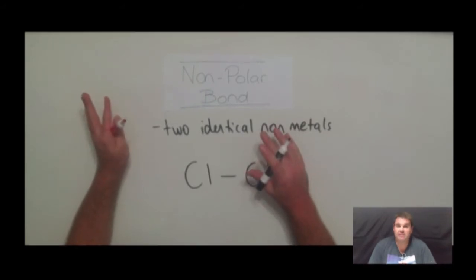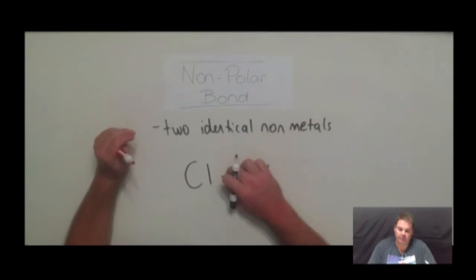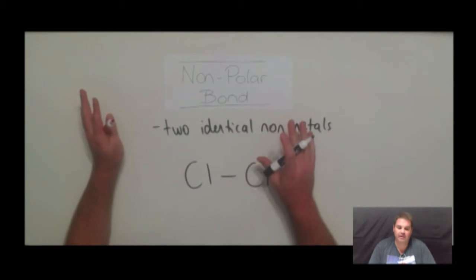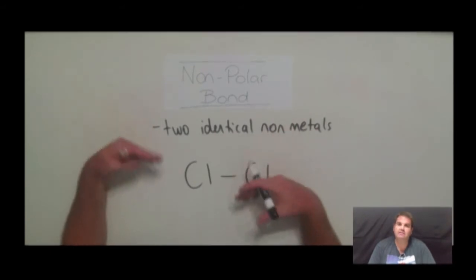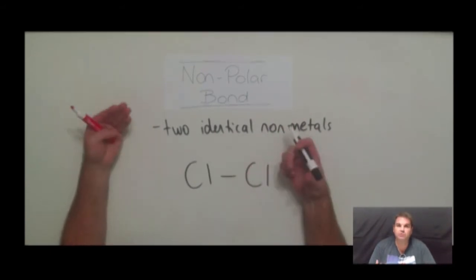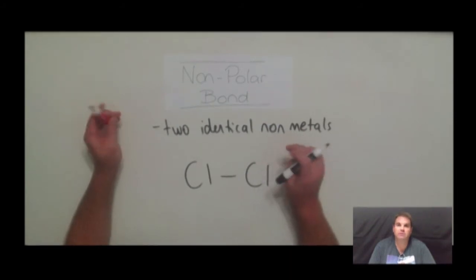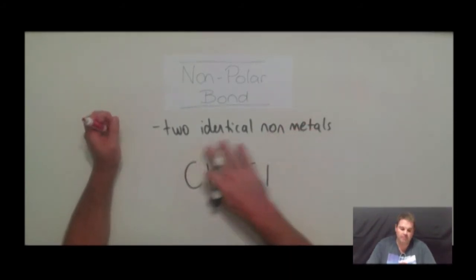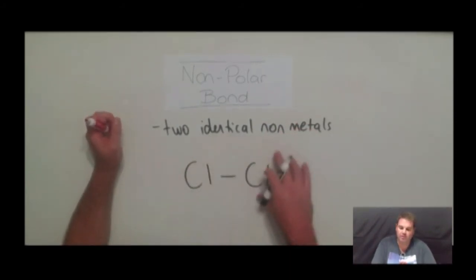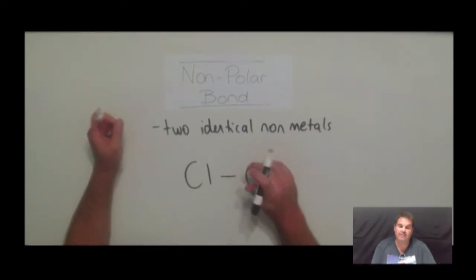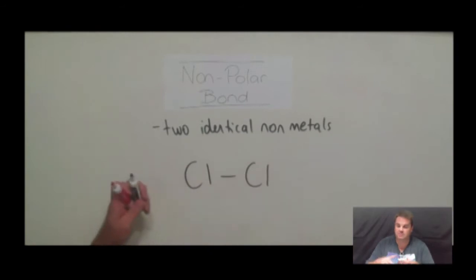In an ideal world we have the electrons right in the middle. But we can occasionally have what we call induced dipoles, and I'll come back to that when we look at dipole-dipole and dispersion bonds. Because even in a non-polar bond, we can actually get some slight partial positive and negative charges across the bond — and that's important, so I'll explain that a little bit later.